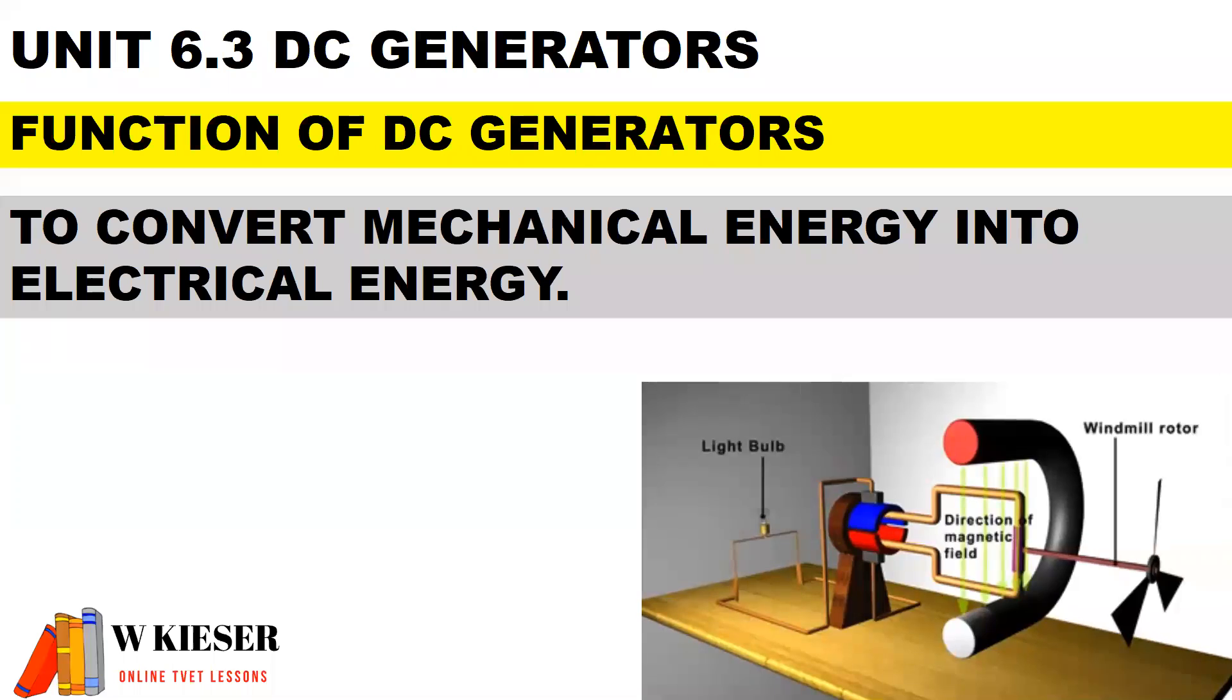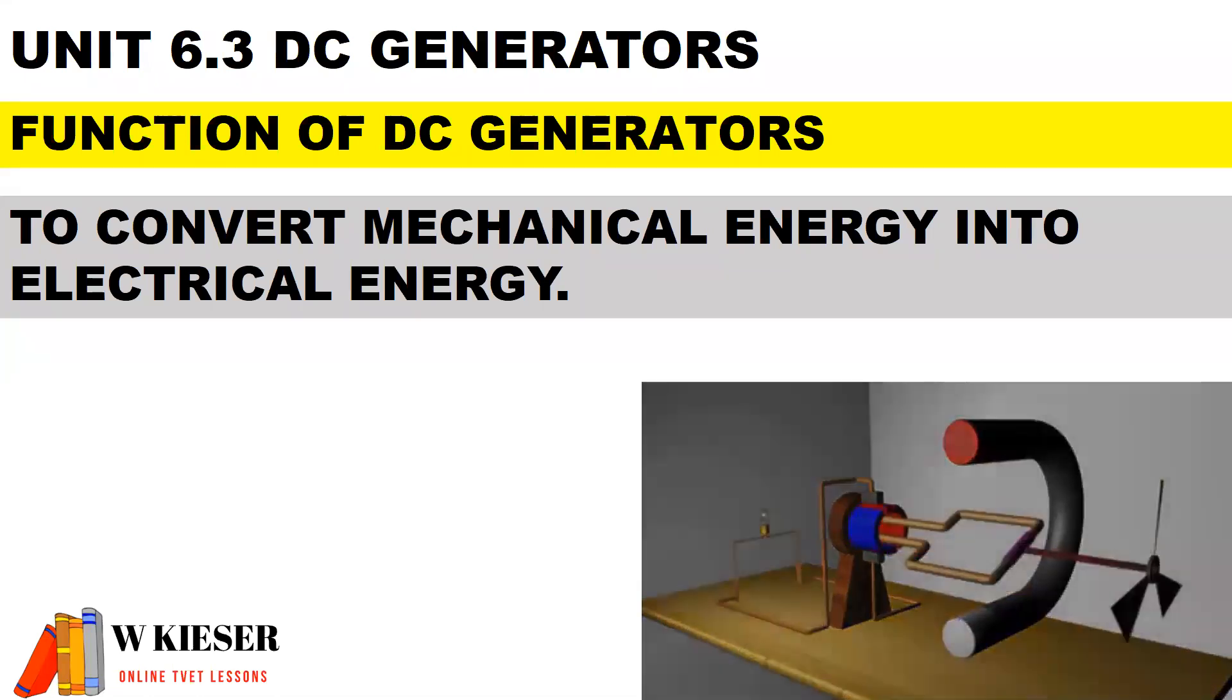For DC generators, in terms of the function of a generator, it is to convert mechanical energy into electrical energy. So we have a prime mover which is moving the rotating assembly.